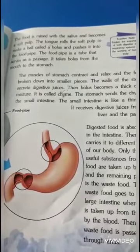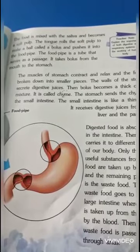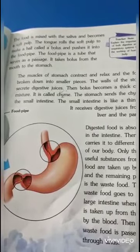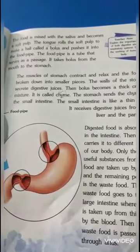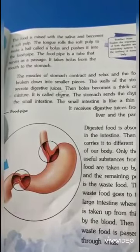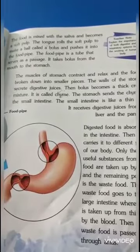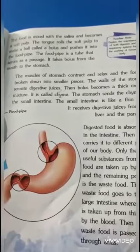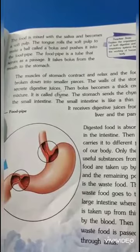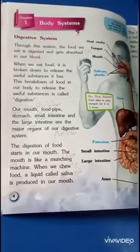The food is mixed with the saliva and becomes a soft pulp. The tongue rolls the soft pulp to make a ball called a bolus and pushes it into the food pipe. The food pipe is a tube that serves as a passage — it takes the bolus from the mouth to the stomach.